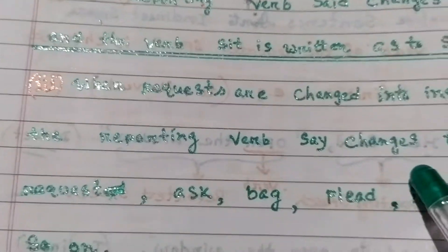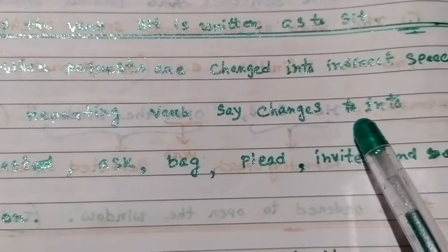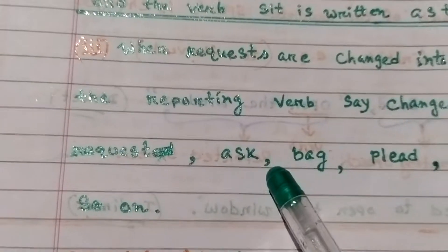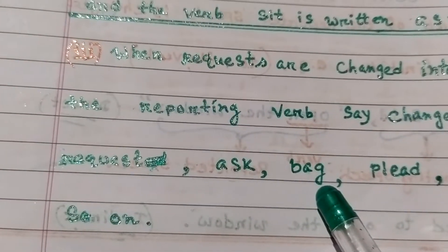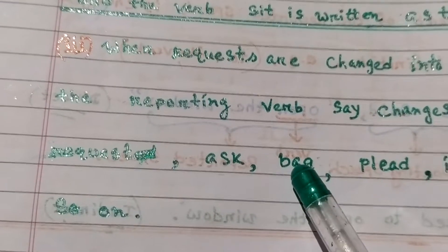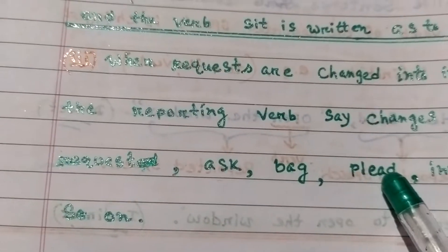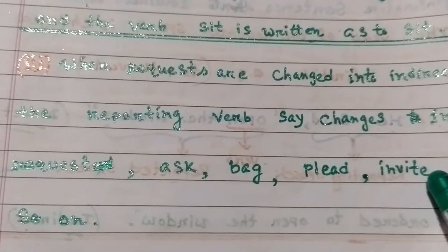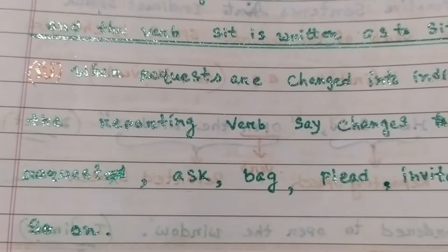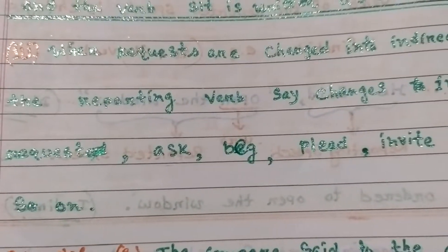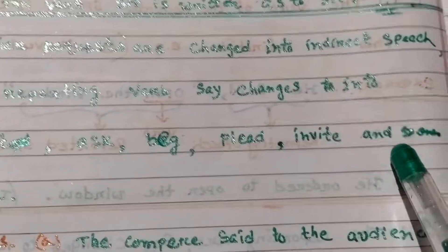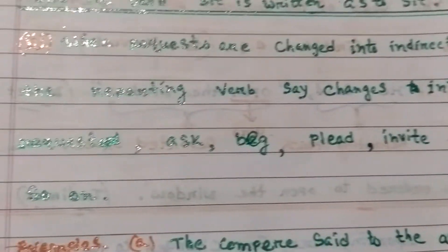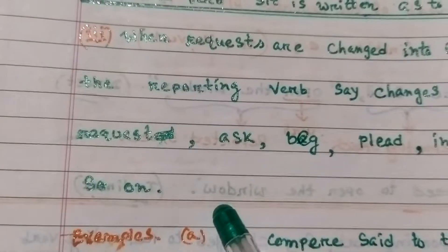Number three: when requests are changed into indirect speech, the reporting verb 'said' changes to ask, beg, plead, invite, and so on.